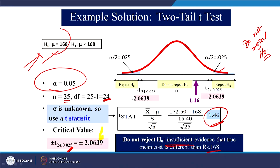We will say the mean price is 168 rupees. We have not rejected the null hypothesis, so we say the mean price is this much. Had we rejected it, we would have said that the mean price has gone up because our sample average is 172.5. But since we do not reject the null hypothesis, the price is stated as 168 rupees.